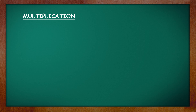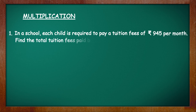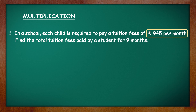Let's begin with the first question. In a school, each child is required to pay a tuition fees of rupees 945 per month. Find the total tuition fees paid by a student for 9 months. The fees for 1 month is rupees 945 and you have to find the fees for 9 months, for which we multiply 945 by 9.